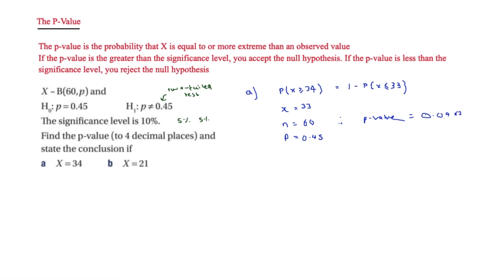In our conclusion: 0.0462 compared to the 5% significance level — it is less than 0.05. Since the p-value is less than the significance level, we reject H0. Therefore p is not equal to 0.45.